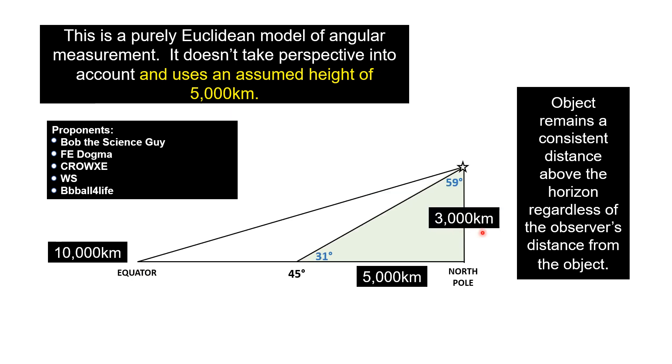Of course, you can also change the height of Polaris without changing the distances to the 45th latitude or the equator. But now you have another problem because the observed angle at the 45th latitude does not match what you actually see.